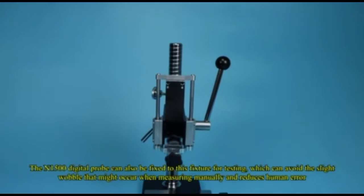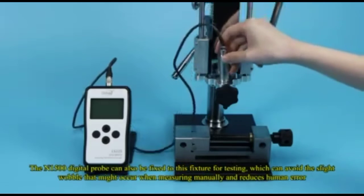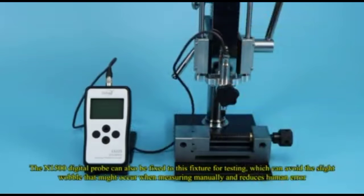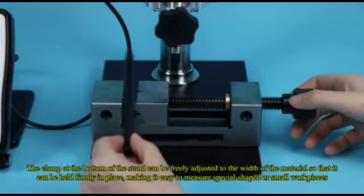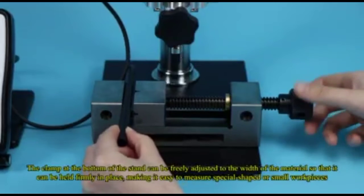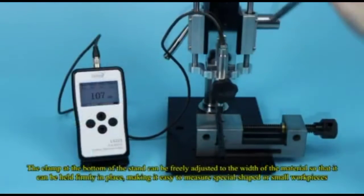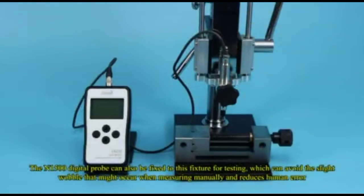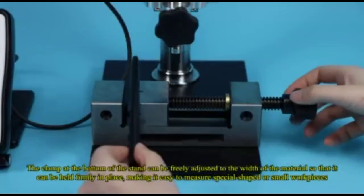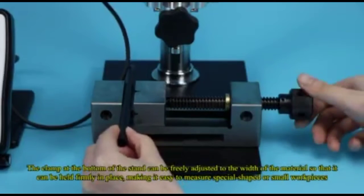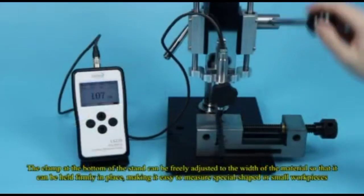The N1500 digital probe can also be fixed to this fixture for testing, which can avoid the slight wobble that might occur when measuring manually and reduces human error. The clamp at the bottom of the stand can be freely adjusted to the width of the material so that it can be held firmly in place, making it easy to measure special shaped or small workpieces.